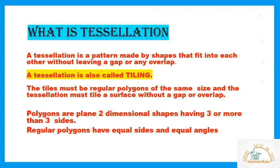Now, polygons are plain two-dimensional shapes having three or more than three sides. Regular polygons have equal sides and equal angles.